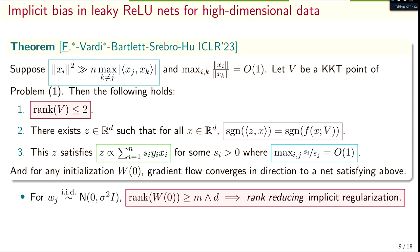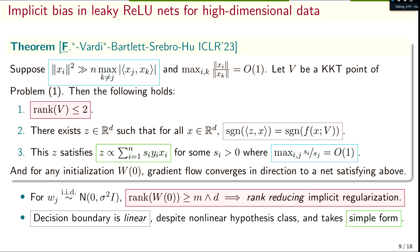This result is notable: if you think about starting from random Gaussian initialization, the rank at initialization is full rank with probability one. What this is saying is that gradient flow has a very strong bias towards reducing the rank in the setting where the data is very high-dimensional. There are many ways you could imagine perfectly fitting the data, but what gradient flow prefers is something that has a linear decision boundary that takes a particularly simple form.